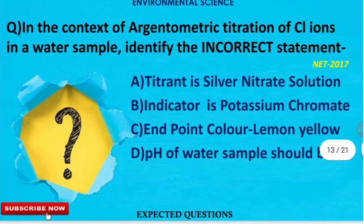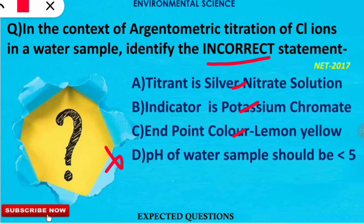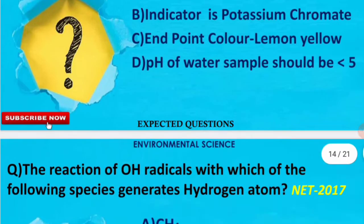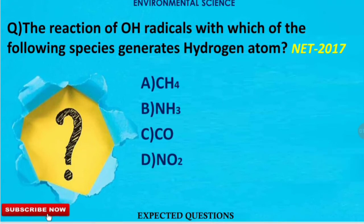The next question is about argentometric titration of chloride ions in a water sample — identify which statement is incorrect. The titrant is a silver nitrate solution (correct), the indicator is potassium chromate (correct), and the endpoint is lemon yellow color (correct). The incorrect statement is option D: the pH of the water sample in argentometric titration of chloride ions should be greater than 5.